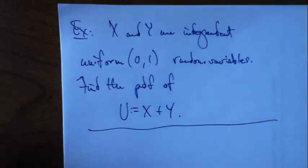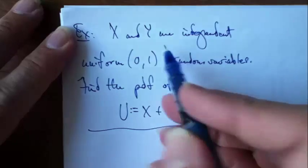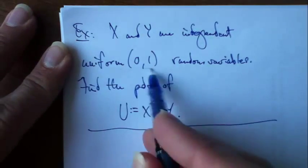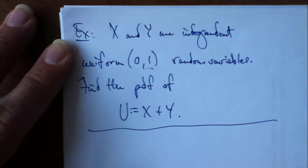Here's another great example. Suppose that x and y are independent uniform (0,1) random variables.